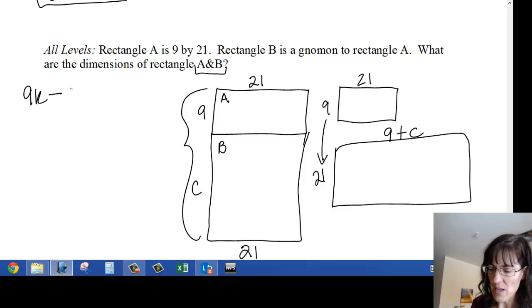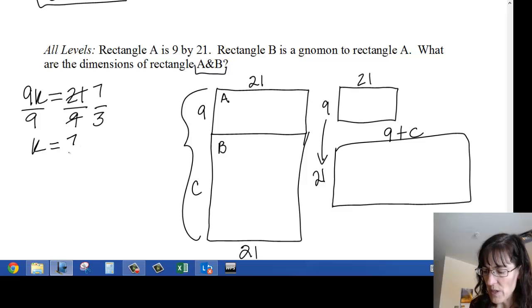So 9k equals 21, divide by 9, k equals, I can divide that by 3, and that by 3, so I get 7 thirds.